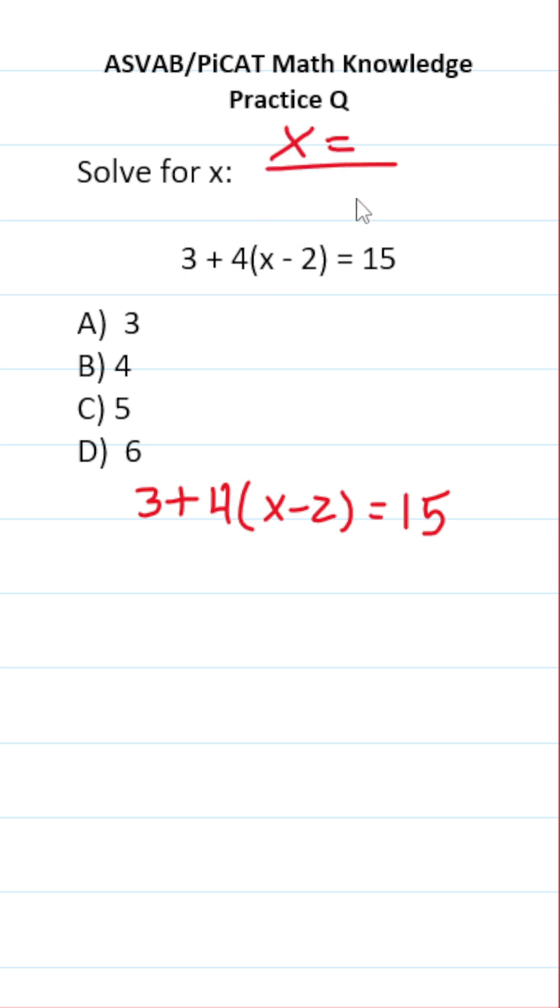That is, we want to get x equal to something by itself. Let's get started by subtracting 3 from both sides. In doing so, this crosses out over here, leaving you with 4 times x minus 2 on this side. 15 minus 3 is 12.